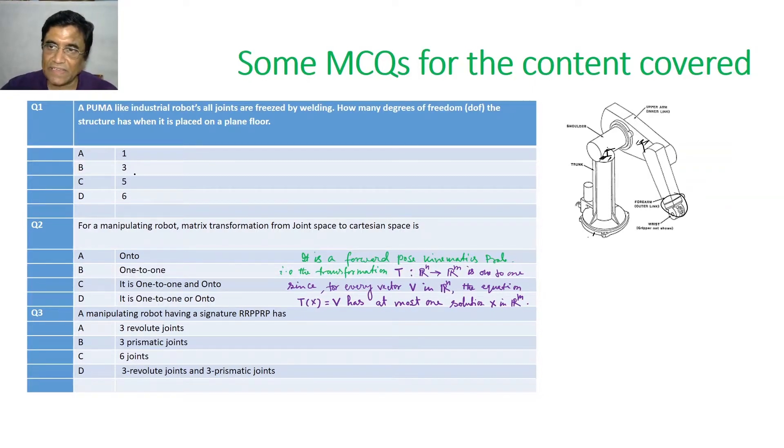You are right. Correct answer is three. Why? Because when it is completely fringed, it will act as a solid body. And when a solid body is kept on a 2D surface, it can have only three degrees of freedom. What are those three degrees of freedom? Translation about X, translation about Y and rotation about Z. So, nothing else can happen. Correct answer is B, three.